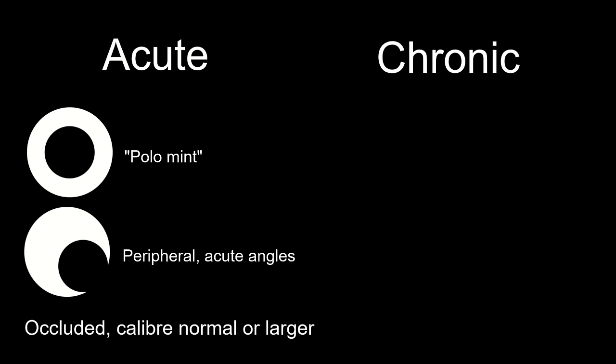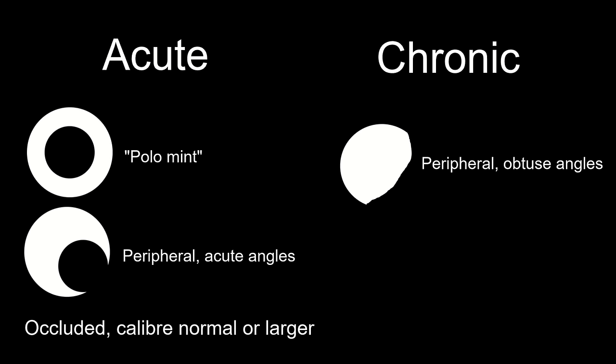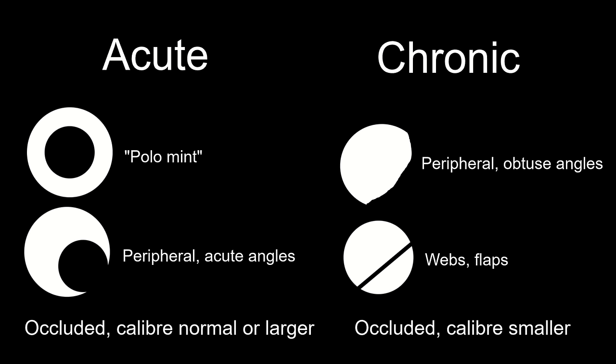In chronic PE, filling defects tend to be more peripheral and specifically when peripheral, they form an obtuse angle with the vessel wall. If they completely occlude the PA branch, the proximal vessel size is often smaller than adjacent vessels. You may also see webs or flaps, which are very linear in appearance. Additional findings of CTEPH — chronic thromboembolic pulmonary hypertension — are covered in our course.